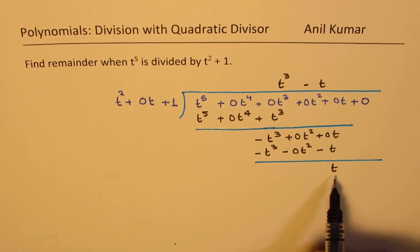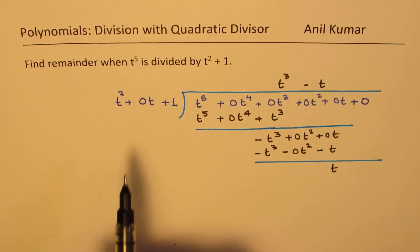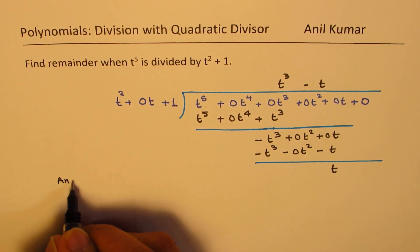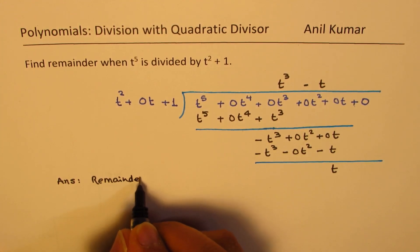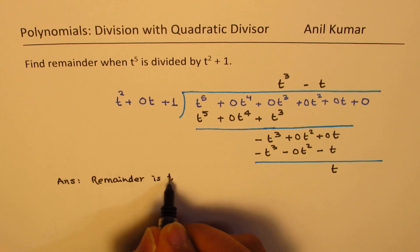Now since t has a degree which is lower than the divisor, that becomes the remainder. And so we have our answer that is the remainder here is t, right?